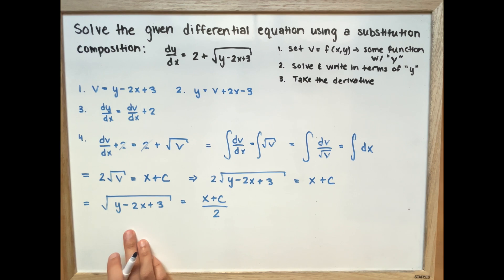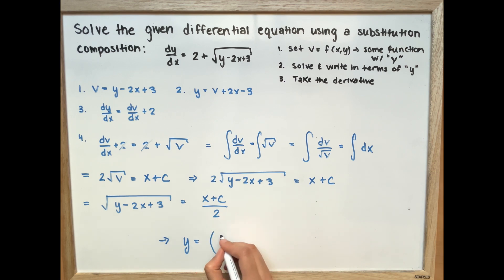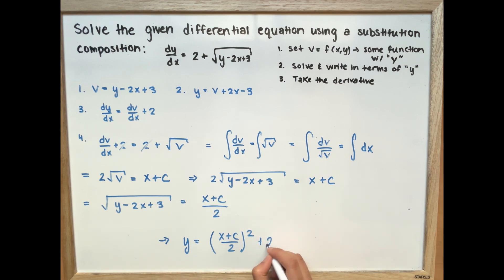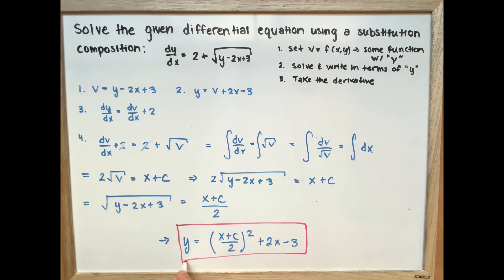Now we can rewrite this in terms of just y. So our y is equal to the quantity x plus c over 2, squared, plus 2x minus 3. And this is going to be our final answer.